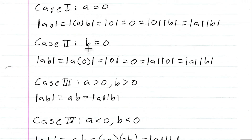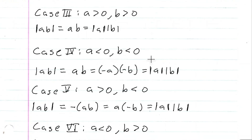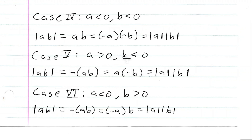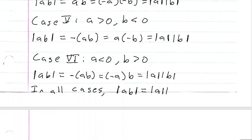We've proven it for all possible cases of a and b: when a was zero, when b was zero, when both were greater than zero, when both were less than zero, when one was greater than zero and one was less than zero, and when the other was less than zero and the other was greater than zero. In all cases, the absolute value of ab is equal to the absolute value of a times the absolute value of b. And that is the proof.